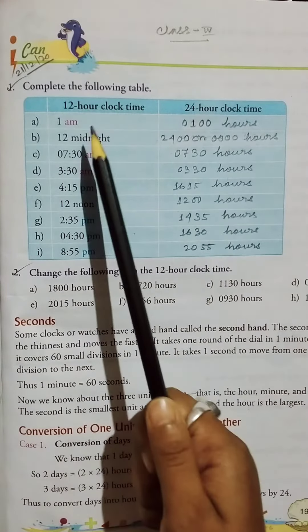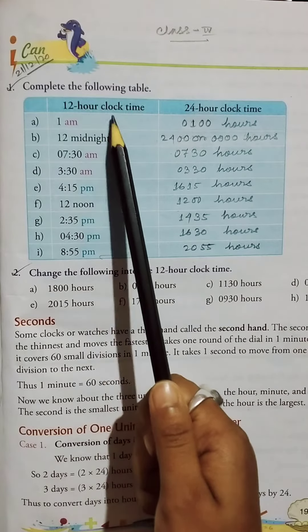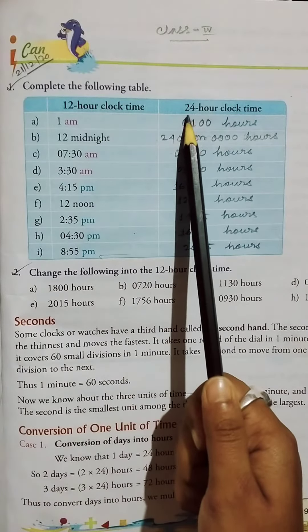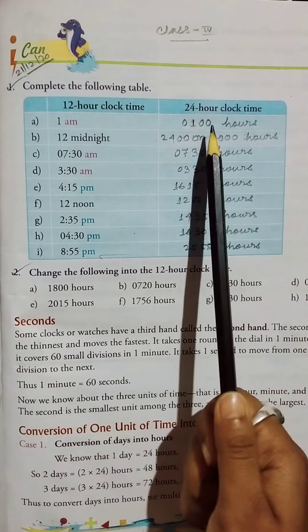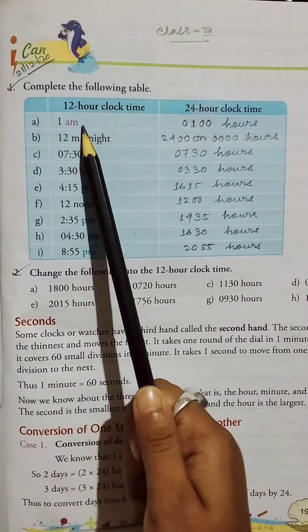The 12-hour clock time, we'll take and convert to 24-hour clock time. Okay? So firstly here, 1 a.m.